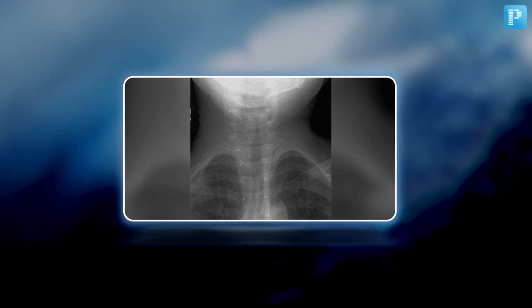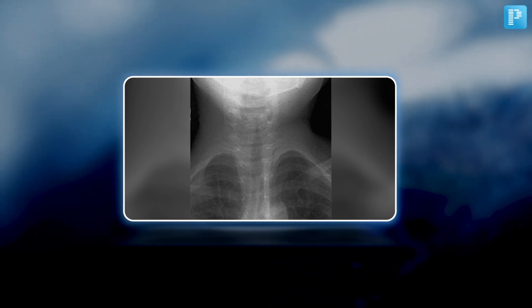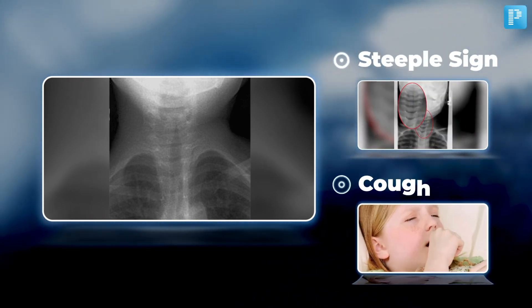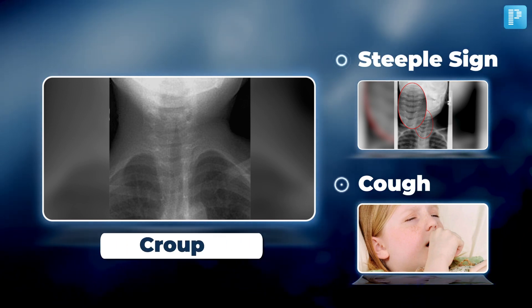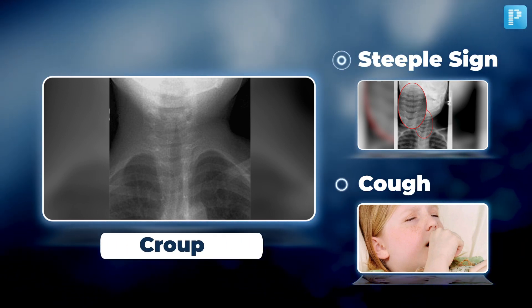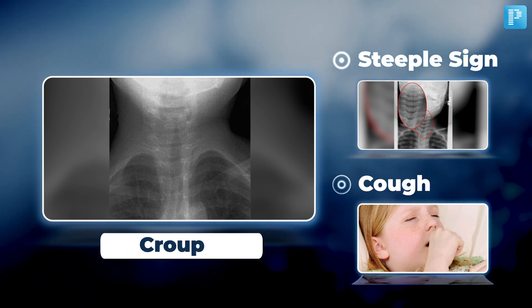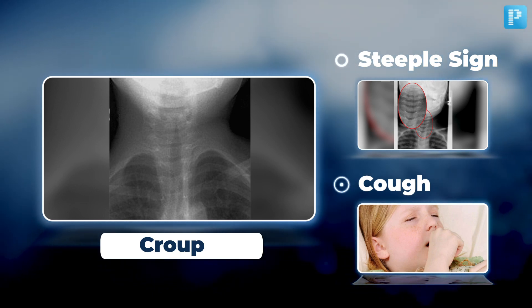Observe closely. What can you identify in this image characterized by the steeple sign and a distinctive barking cough? This is croup, known for its classic steeple sign and barking cough. Well done if you got it right too.